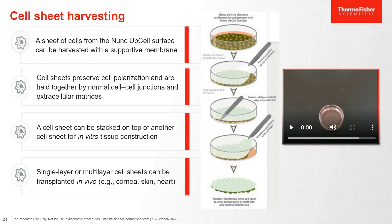There's a quick video showing how it is done. You remove the media first, keep it at room temperature, put the cell shifter on, peel it off, and then transfer it to the host surface. Then you put some media on top and remove or peel off the cell shifter or supporting membrane. This is how the cell sheet grown on the UpCell surface can be transferred to the host surface.